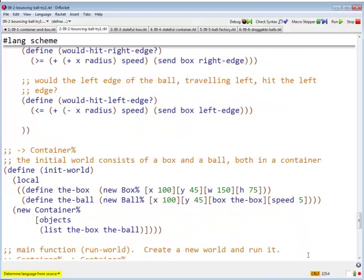So let's build ourselves a world. So we're going to build a box. We're going to build ourselves a ball, and we're going to tell the ball that this, the box, is its box. And now we will build a new container containing the box and the ball. All right, everybody happy?